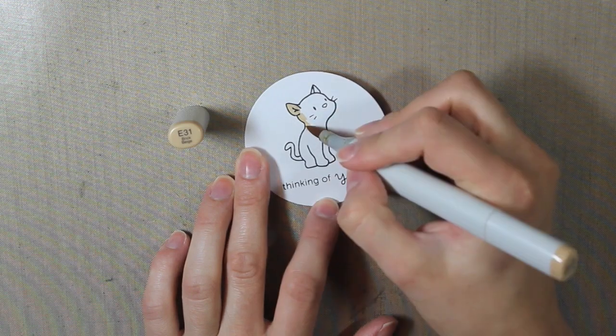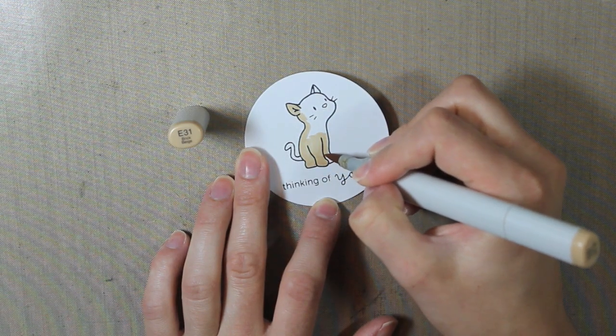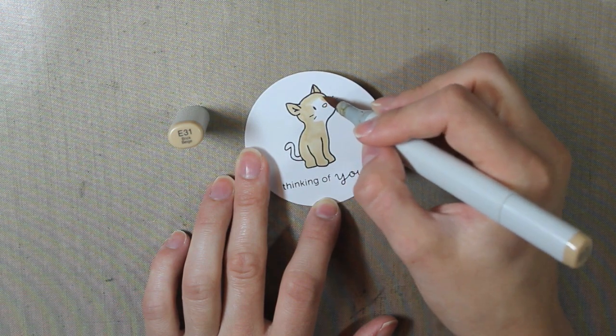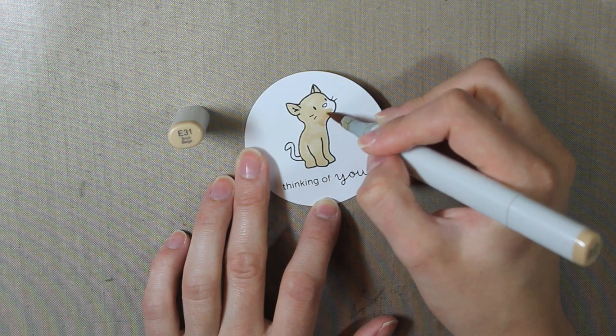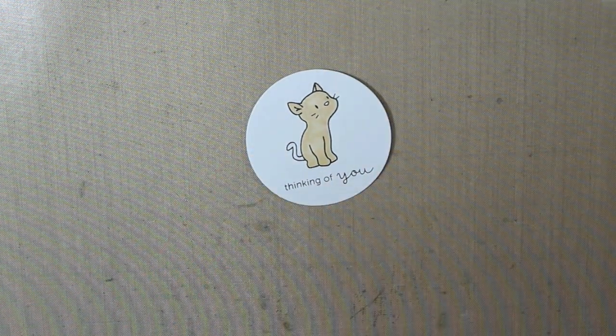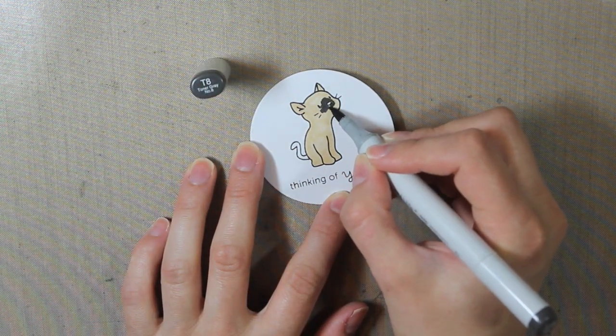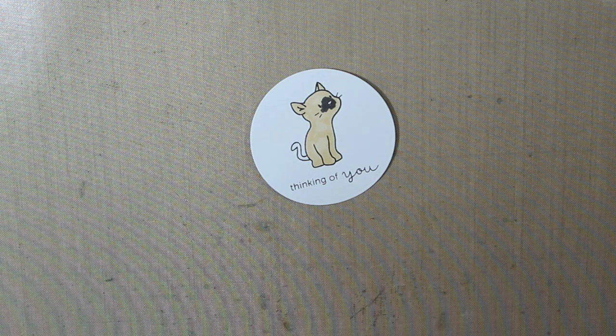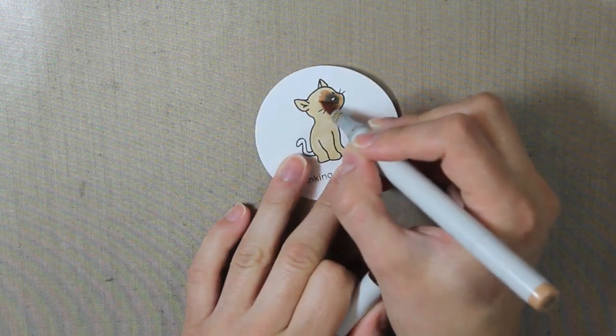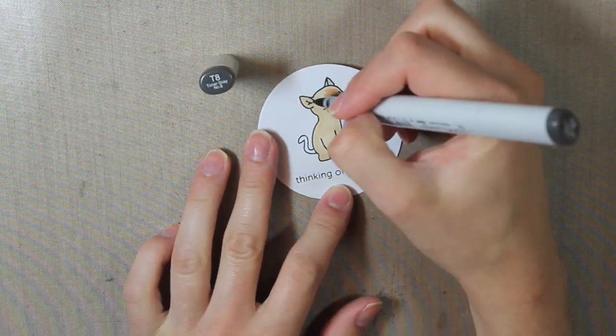So for the cat, of course I need to color that in to look like my Siamese cat. So I'm starting with a base of the E31 which is like a light tan color. And then I'm going to color in the darker areas with the T8. So you can see I'm just adding that to the center of the face. I know it looks super scary right now. Like it shouldn't be there.